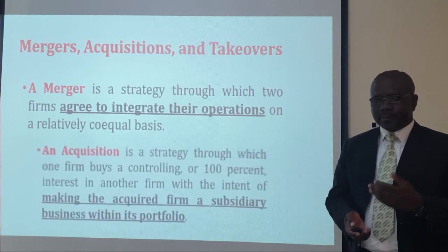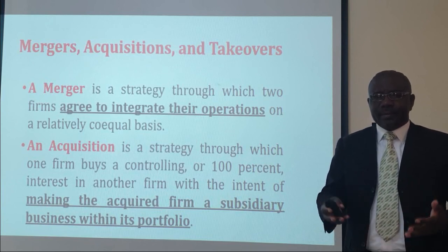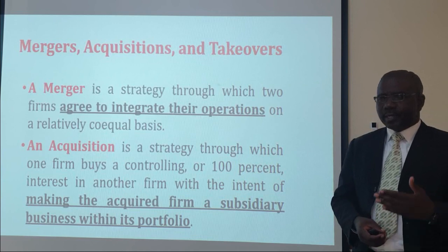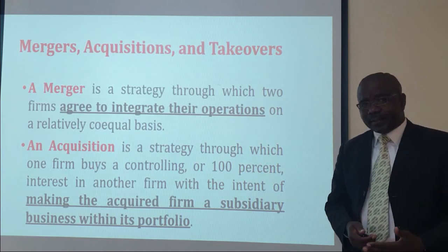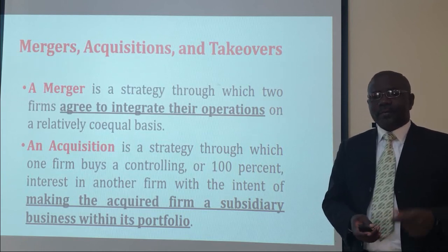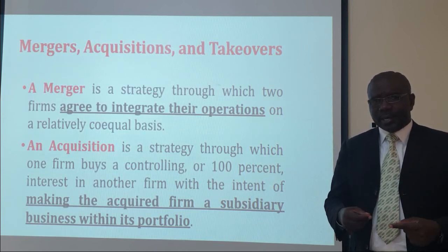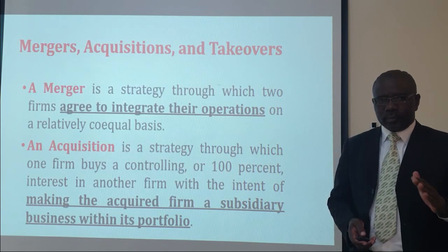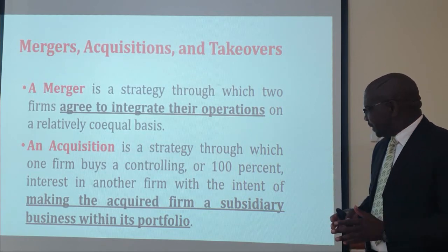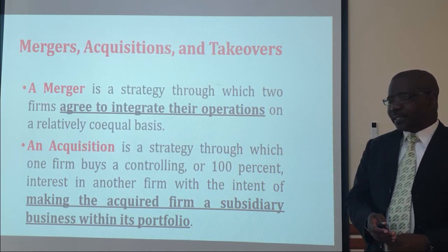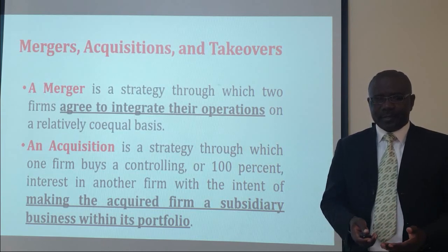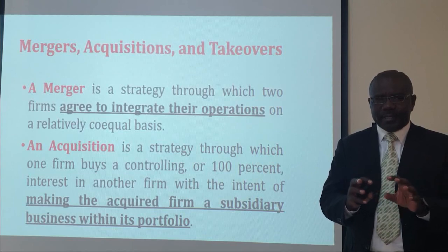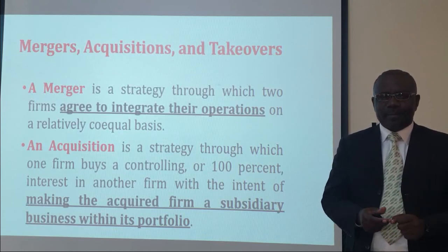But also, what is called an acquisition? What is an acquisition strategy? Coming from the term 'acquire' — to acquire is to buy something. So this is a situation where one firm will buy a controlling or 100% interest in another firm with the intent of making that firm one of the subsidiary companies in that holding company. So here we have a different scenario where one firm gets control, the controlling interest of that organization, and you make it a subsidiary business within the portfolio. In a merger, you have a scenario where two firms, A and B, agree to combine their assets and integrate their operations so that they come up with a firm that is larger.